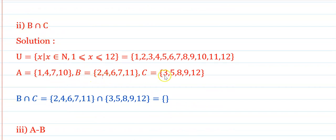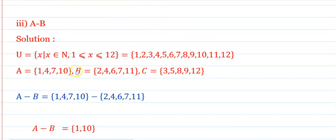For B intersection C: is 2 common? No. Is 4 common? No. Is 6 common? No. Is 7 common? No. Is 11 common? No. Therefore B intersection C equals the empty set.